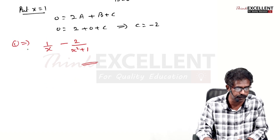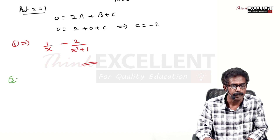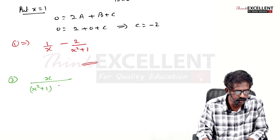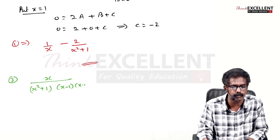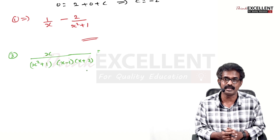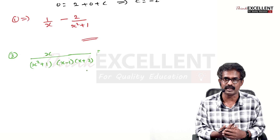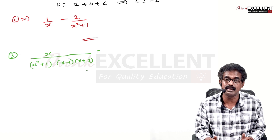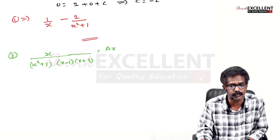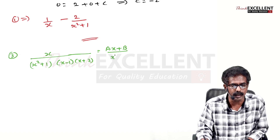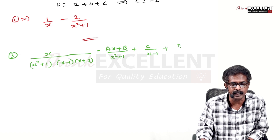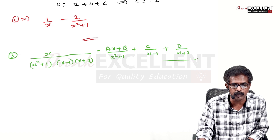For the third question, suppose: x / [(x²+1)(x-1)(x+2)]. The denominator has three factors. The first (x²+1) is quadratic and cannot be factorized, so write a linear expression (Ax+B) for its numerator. For the linear factors write C/(x-1) and D/(x+2). Call this equation (1).